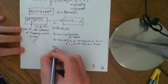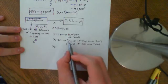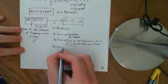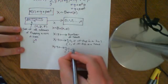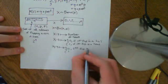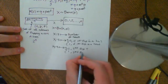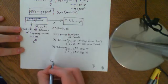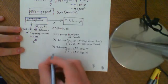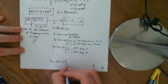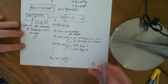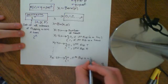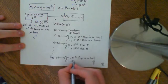Similarly, we define X2, which maps s onto 0 or 1 depending on the second flip — 0 if the second flip is a tail, 1 if the second flip is a head. We continue all the way down to Xn, which maps s onto 0 or 1 — 0 if the nth flip is a tail, and 1 if the nth flip is a head.